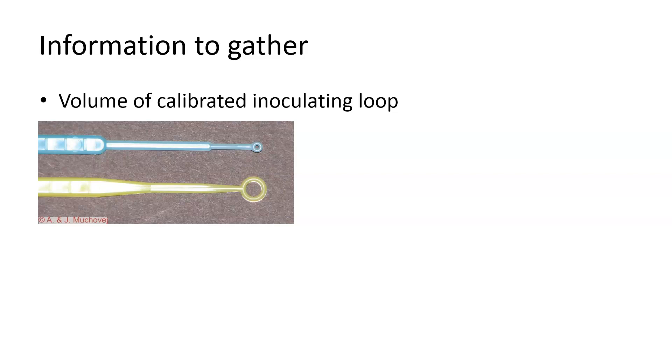We have two different loops. The blue loop is one microliter, which equals one one-thousandth of a milliliter or 10 to the minus three milliliters. The yellow loop is ten microliters, which equals ten one-thousandths of a milliliter or 10 to the minus two milliliters.